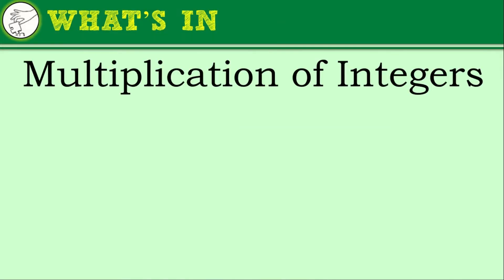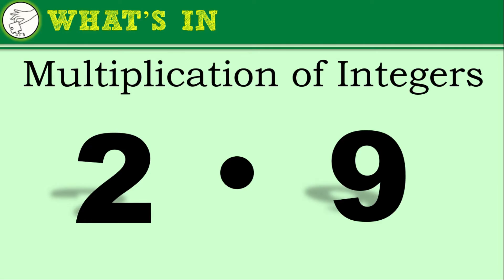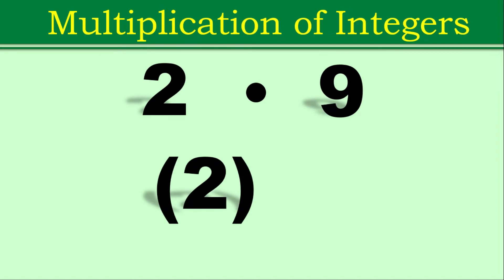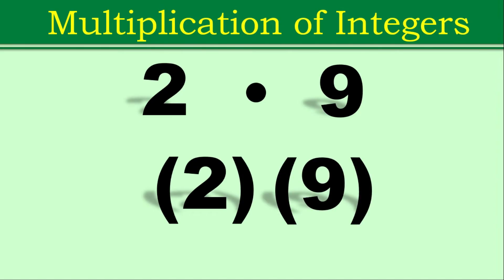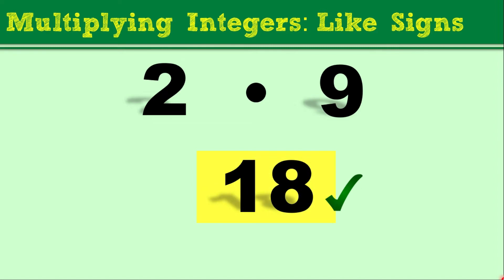Let's have a brief review on how to properly multiply integers. For example, positive 2 multiplied to positive 9 — we use the multiplication dot, or we can enclose them in parentheses. Here, we are multiplying like signs: a positive times a positive. The result will always be a positive integer — that is, positive 18.